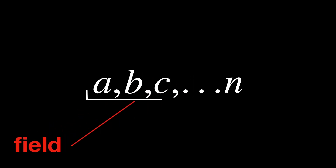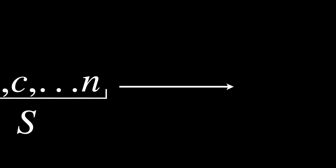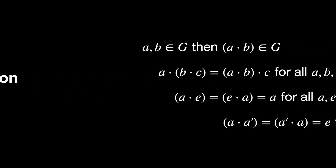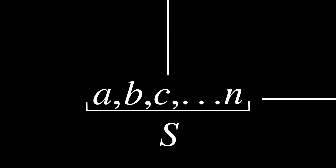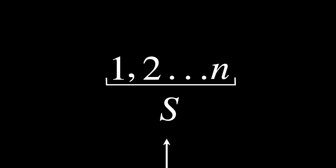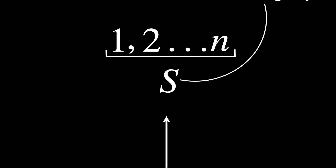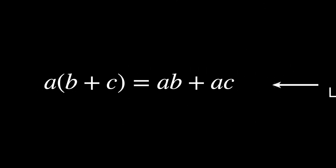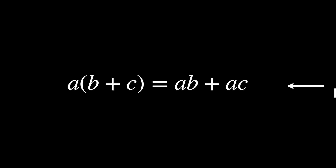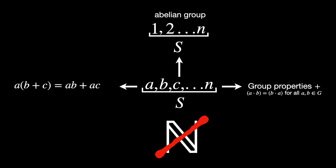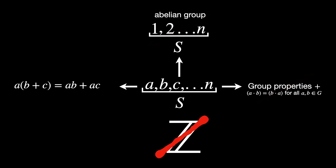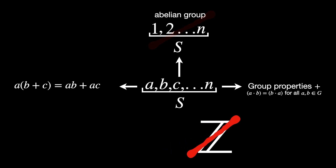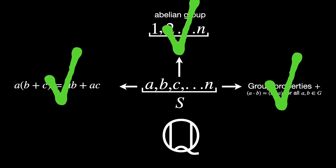This required the use of fields. A set of numbers S with addition and multiplication is a field if: first, S and its addition operation form an abelian group — meaning it has all four properties of a group plus commutativity. Second, removing the identity element zero from that group leaves a set that, under multiplication, also forms an abelian group. And third, addition and multiplication relate through the distributive law. Natural numbers and integers cannot be fields, but rational numbers satisfy all conditions and are therefore a field.